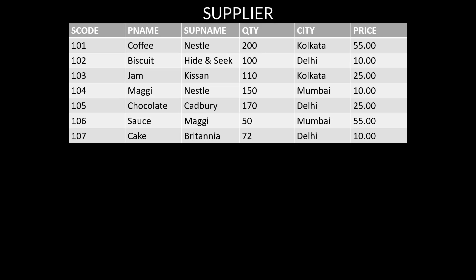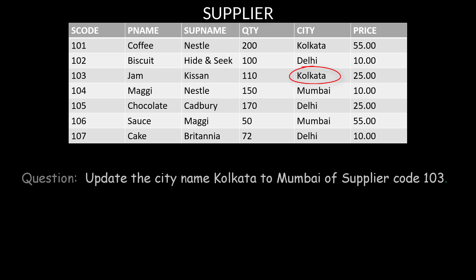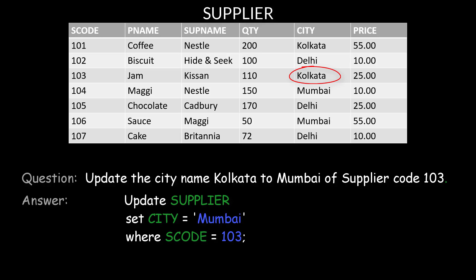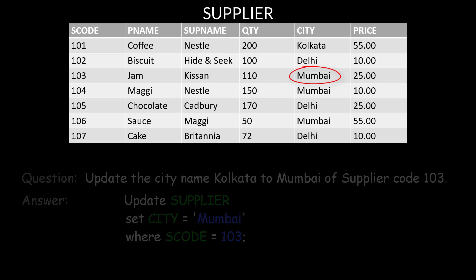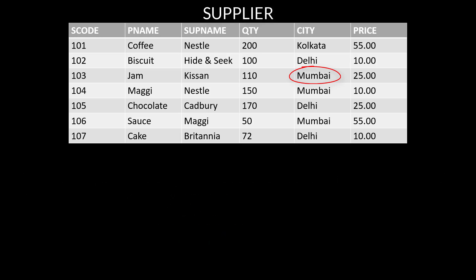In a practical example, suppose you want to change the city name from Kolkata to Mumbai for supplier code 103. The answer is: UPDATE supplier SET city = 'Mumbai' WHERE s_code = 103.